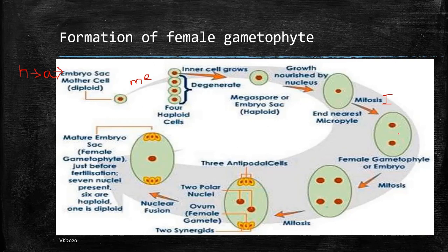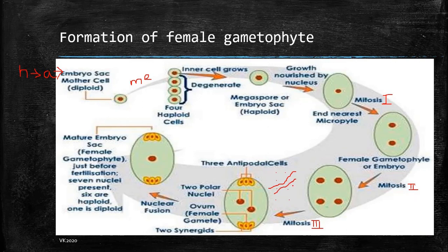This cell undergoes growth due to nutrition obtained from the nucellus and then undergoes mitosis. In the first mitotic division it gives us two daughter nuclei. In the second mitotic division, four nuclei are produced. In the third mitotic division, eight nuclei are produced in total. These eight nuclei are then divided so that they form the three antipodal cells, the three egg apparatus cells, and two polar nuclei. The upper three go on to form the antipodal cells, the center two form the polar nuclei, and the lower three form the egg apparatus cells.